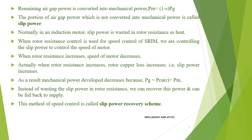When we use rotor resistance control, we control the slip power to control the speed of the motor. When rotor resistance increases, rotor copper loss increases — that is, slip power increases. As a result, mechanical power developed decreases, because PG equals rotor copper loss plus mechanical power developed PM. Instead of wasting the slip power in rotor resistance, we can recover this power and feed it back to the AC supply. This method of speed control is called slip power recovery scheme.